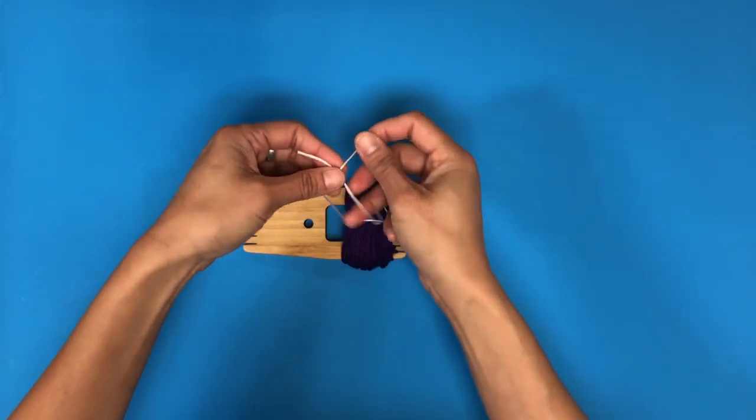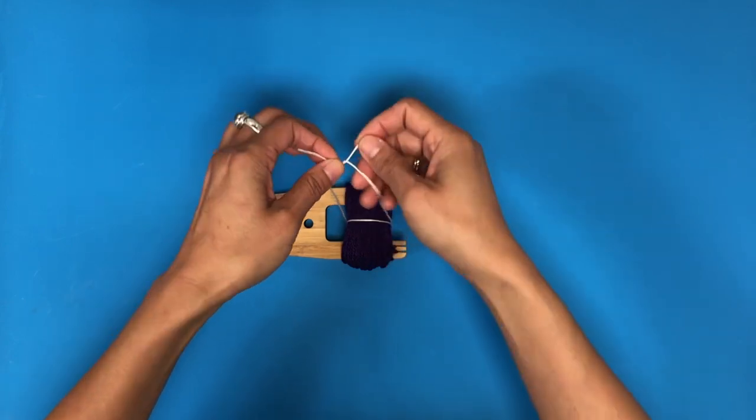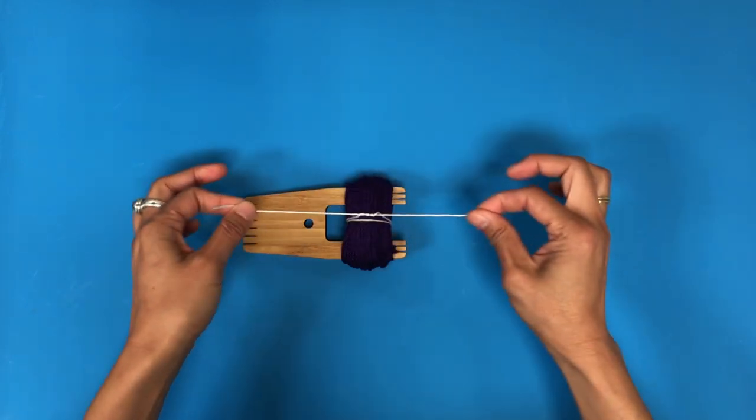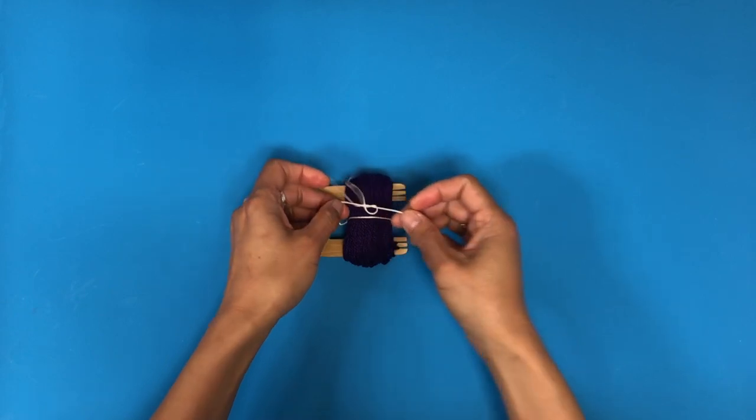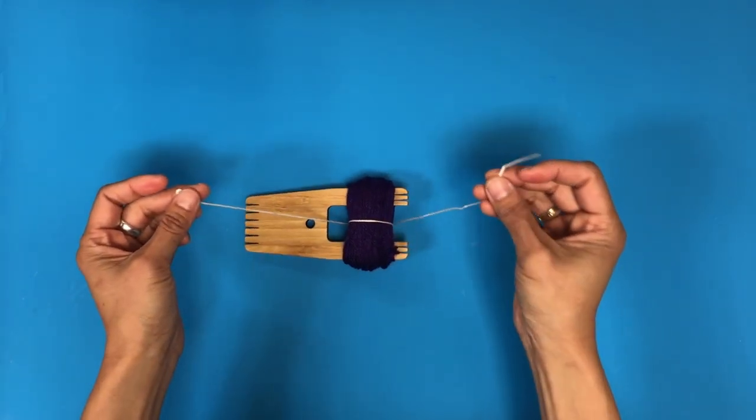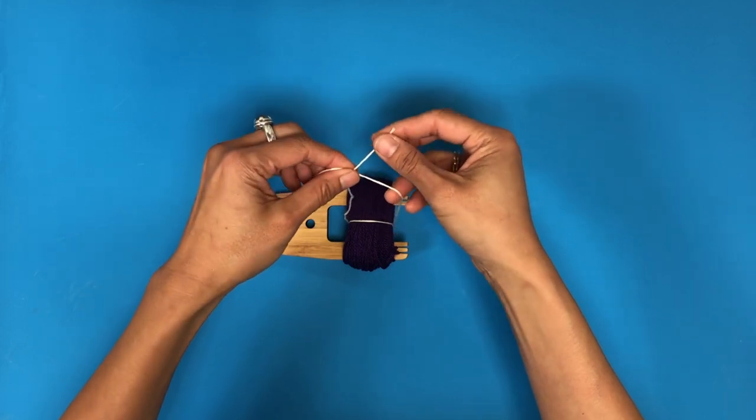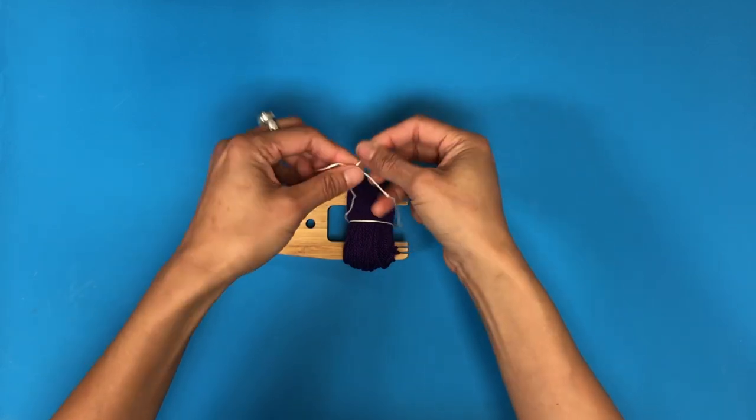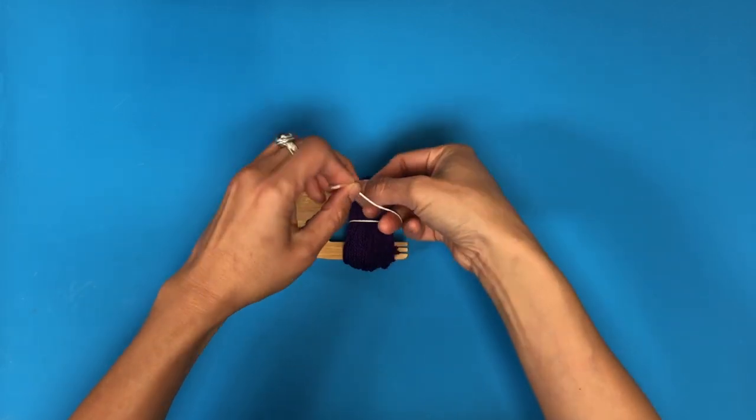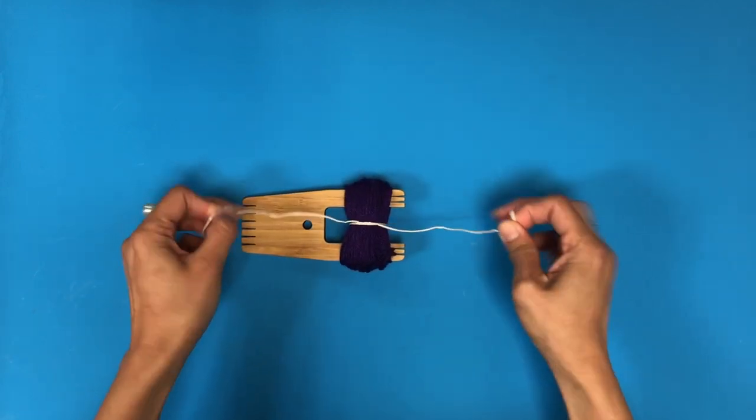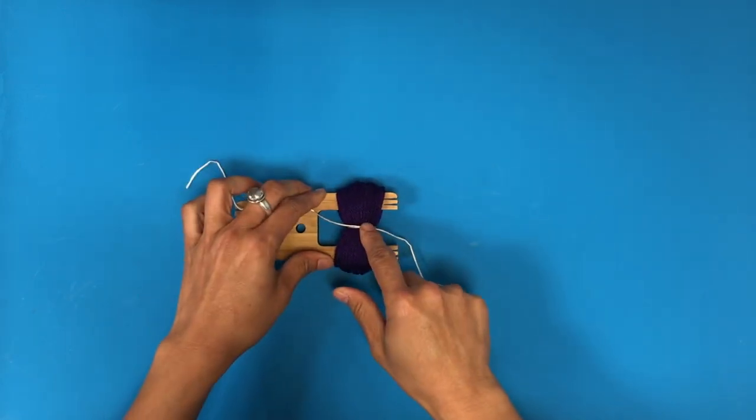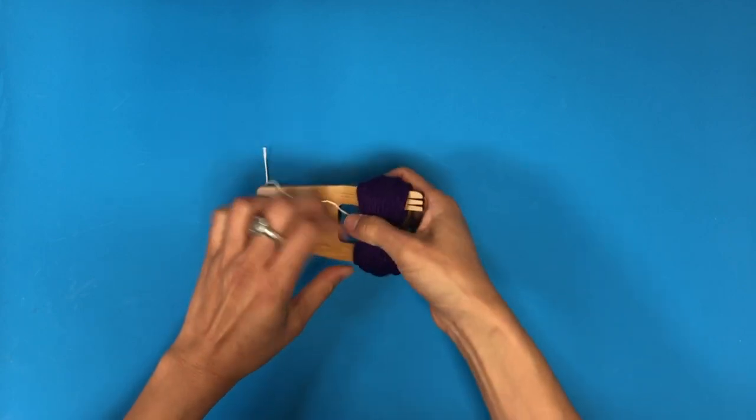Now you're going to make a surgeon's knot. Basically a surgeon's knot is taking this and going twice under, and then pull. So you're going to take one end, cross them over, and then this end you're going to go under twice instead of once for a single knot. Then pull, and this creates great tension and it holds everything in place.